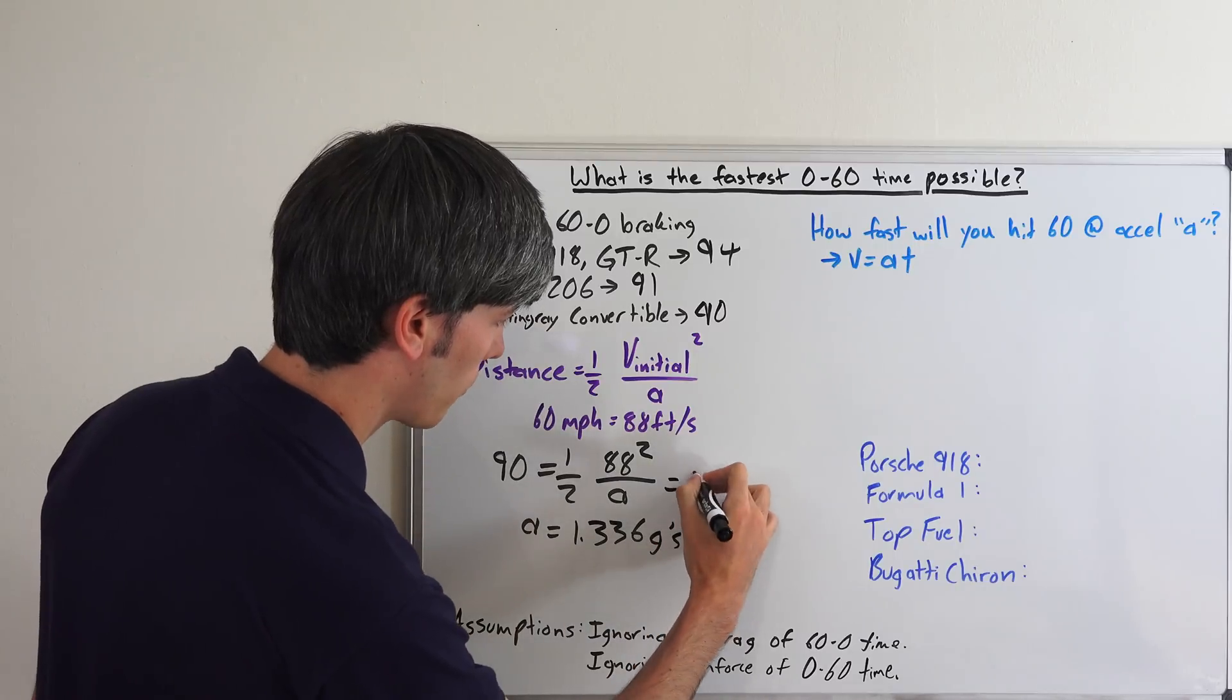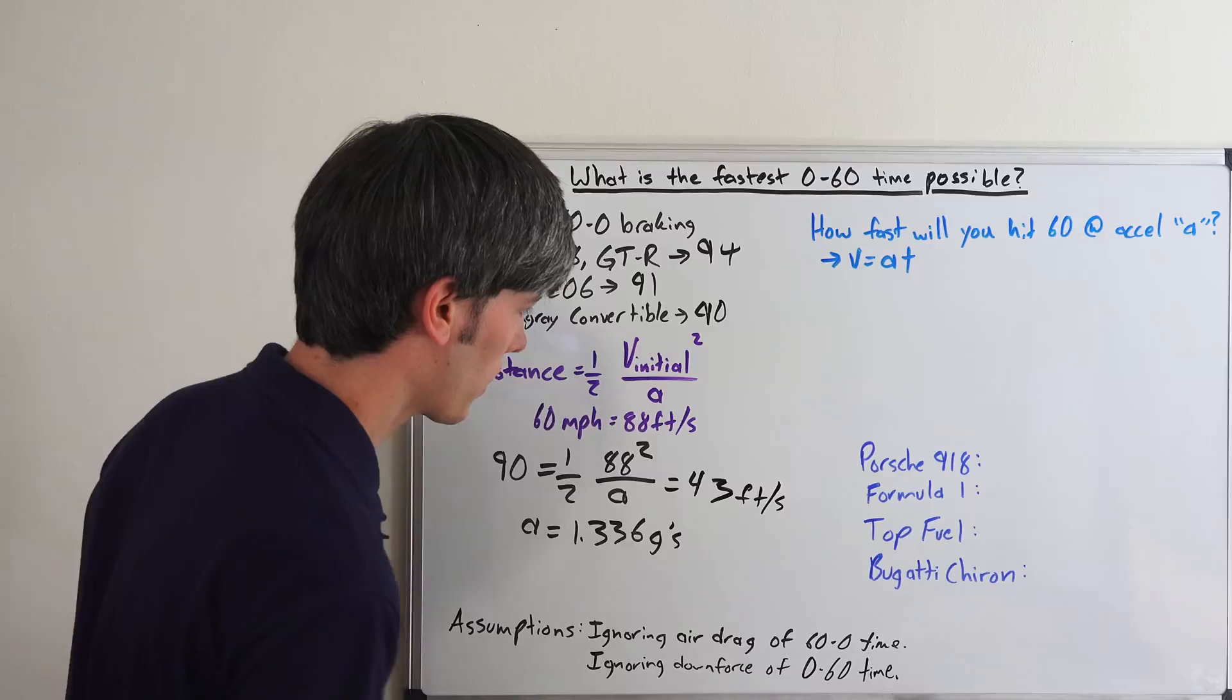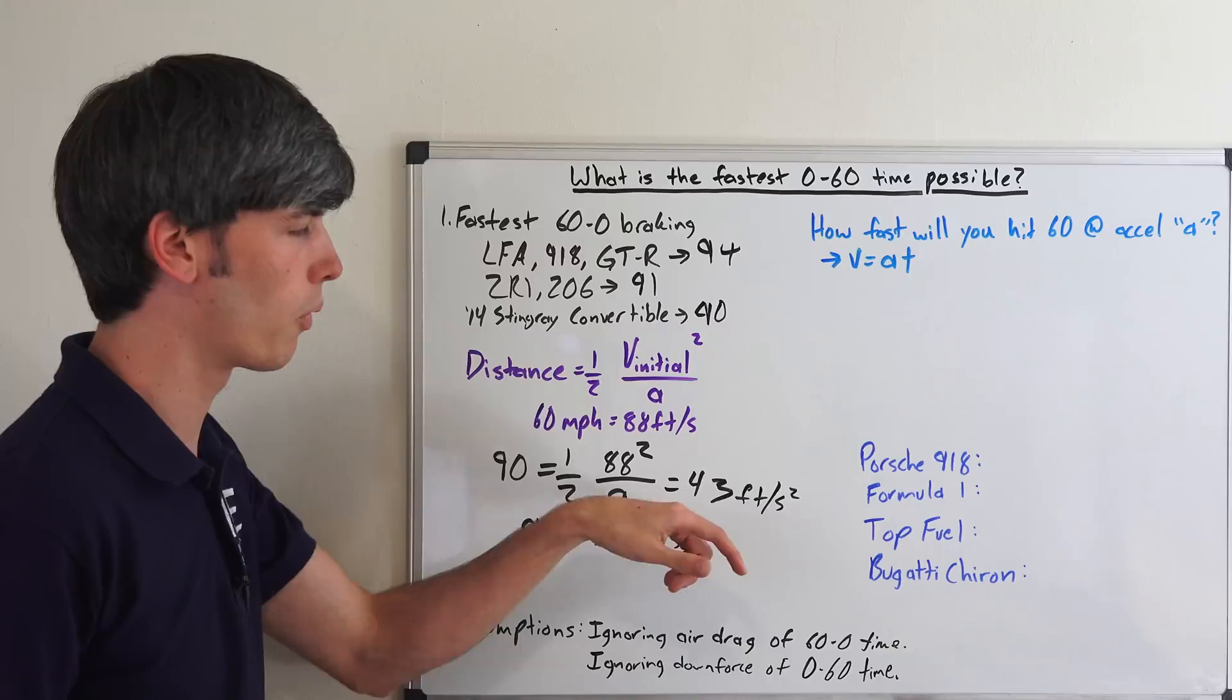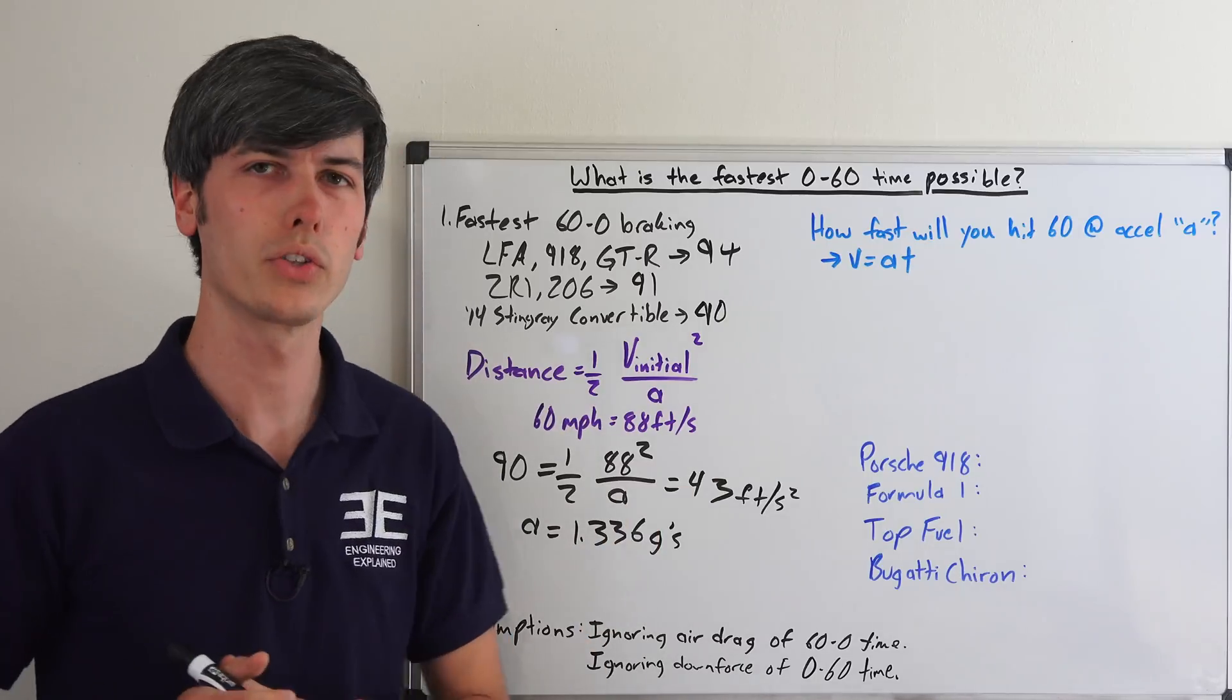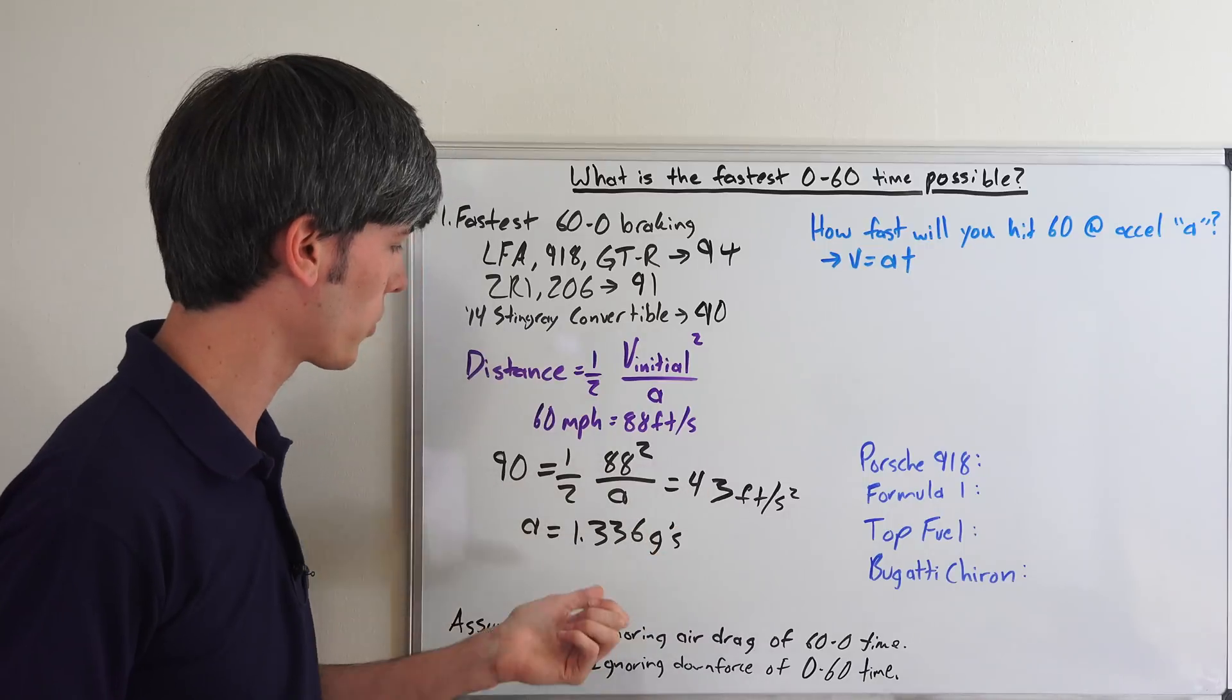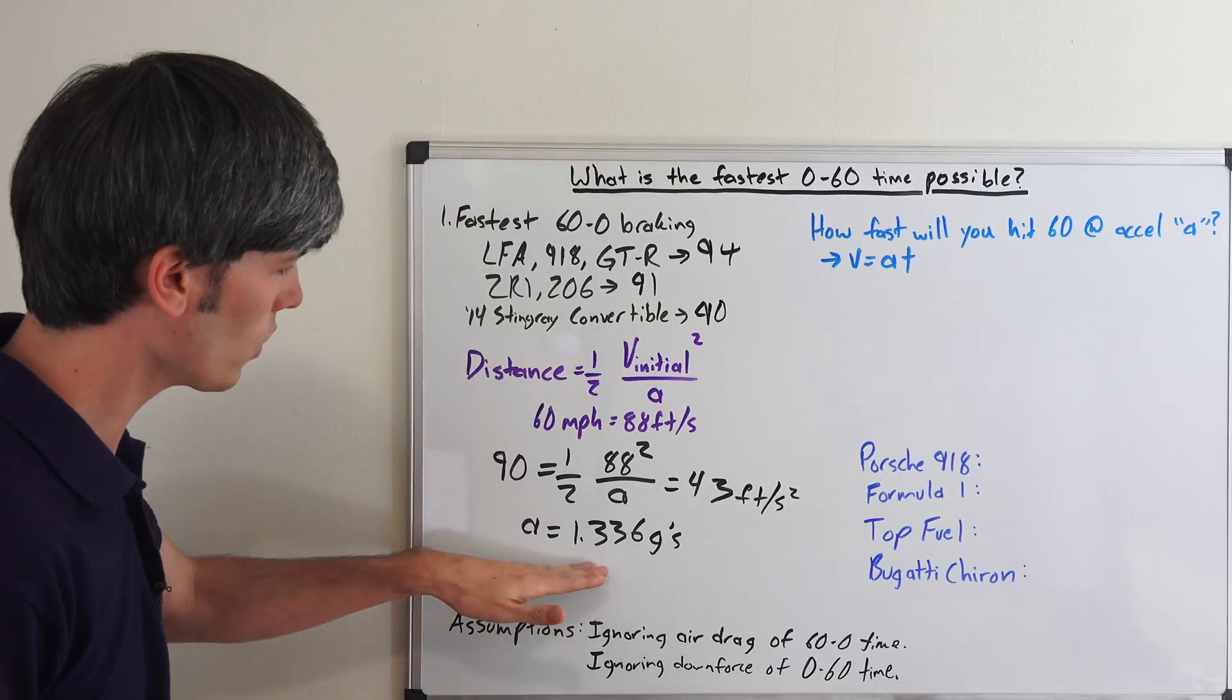It's actually going to give you 43 feet per second squared. And then you divide that by 32.2. That's the gravitational constant, 9.81 meters per second squared, or 32.2 feet per second squared. So, when you divide 43 by 32.2 feet per second squared, you get 1.336 g's.